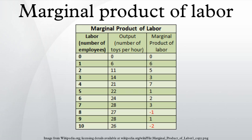Example: Assume that the production function is given, and the output price is $40 per unit. 44.625 is the profit maximizing number of workers. Thus, the profit maximizing output is 20.25 units, and the profit is calculated accordingly. Some might be confused by the fact that intuition would say that labor should be discrete.